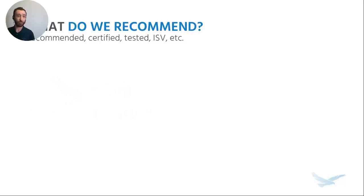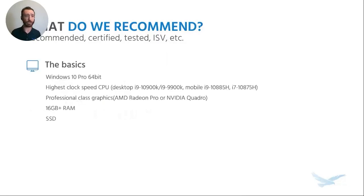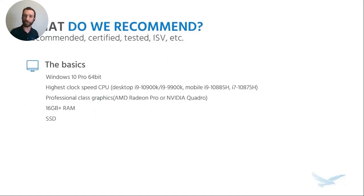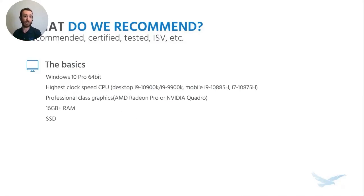The first thing to address is the operating system. You need a Windows 10 Pro 64-bit OS. Windows 7 met its end of life back in January of 2020. So if you are planning on installing 2021, which just launched yesterday, you will need to have a Windows 10 machine to install it.